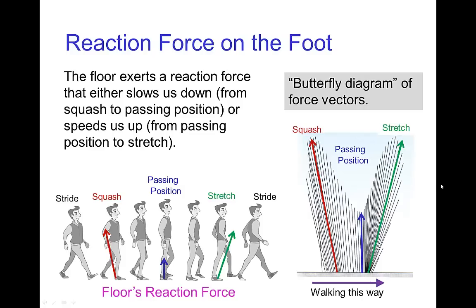You shouldn't think that the reaction force from the floor is always in the forward direction. In fact, it varies — from being up and backwards in the part of the walk from the stride to the passing position. In that part, in order to not fall forward, the character has to exert a force on the floor which is forward, and the floor exerts an upward-backwards force to support the character. Then from the passing position through the stretch and into the stride, the force is upward and in the forward direction. We can see in this butterfly diagram how the force exerted by the floor varies.